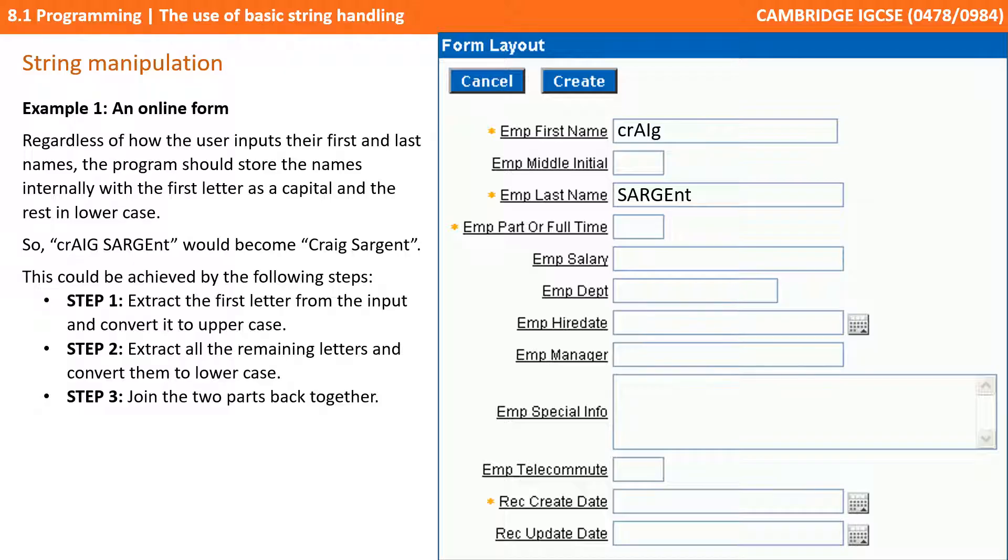Let's look at some examples. The first here is an example of an online form. Regardless of how the user inputs their first and last name, we want the program to store the names internally with the first letter as a capital and the rest in lower case.